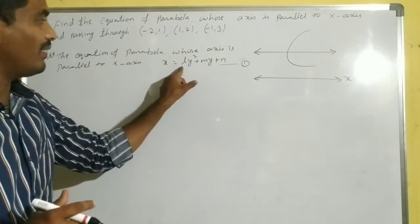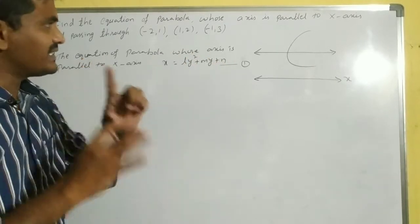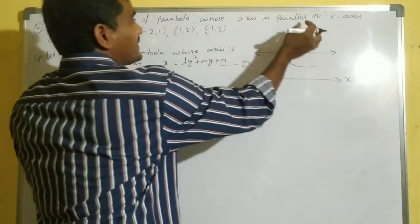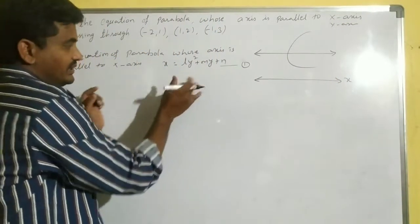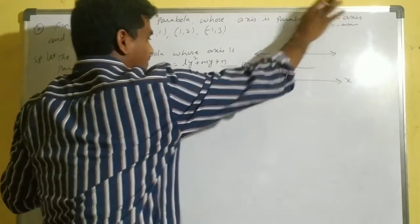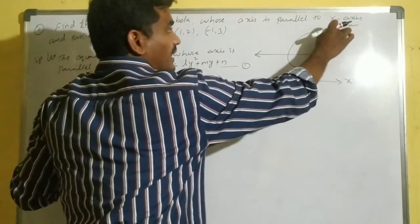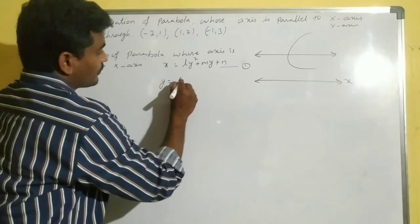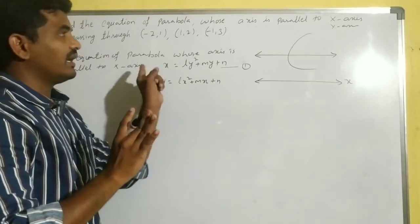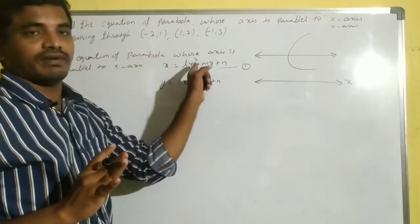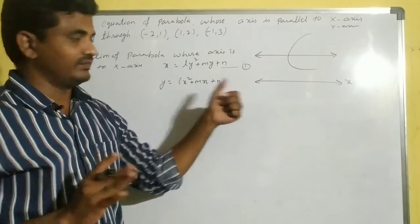If the axis is parallel to the x-axis, then x = ly² + my + n. If the axis of the parabola is parallel to the y-axis, then y = lx² + mx + n. We have to change accordingly — if parallel to x-axis, use x = ly² + my + n; if parallel to y-axis, use y = lx² + mx + n.